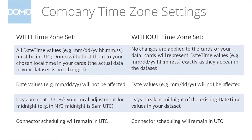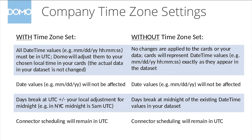Just remember, if you turn on this local timezone setting, Domo will always assume that the date time values in your data are coming in as UTC. By turning the setting on, you're telling Domo to adjust the date time values either forward or backward by the hour offset between UTC and your selected timezone.